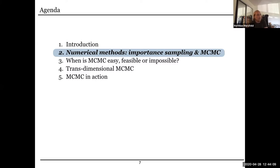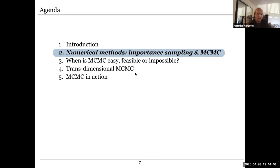I want to briefly tell you what my talk is going to be about. I will review two techniques for drawing samples from a given distribution: importance sampling and Markov chain Monte Carlo. Then we'll spend some time thinking about when these sampling techniques are easy, when they're feasible but difficult, and when I think it's currently impossible to solve these problems. I'm also very excited to tell you a little about trans-dimensional Markov chain Monte Carlo, where the complexity of your model is essentially an additional parameter you want to estimate. I expect I will not actually get to the examples section, so perhaps another time.